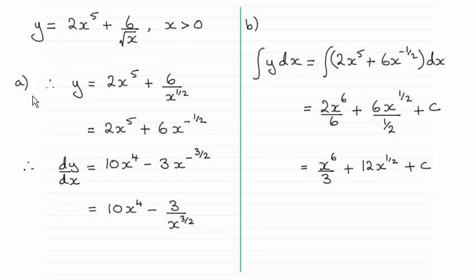So for the first part, you had to find dy by dx, which was this result here, 10x to the power 4 minus 3 over x to the power 3 over 2.